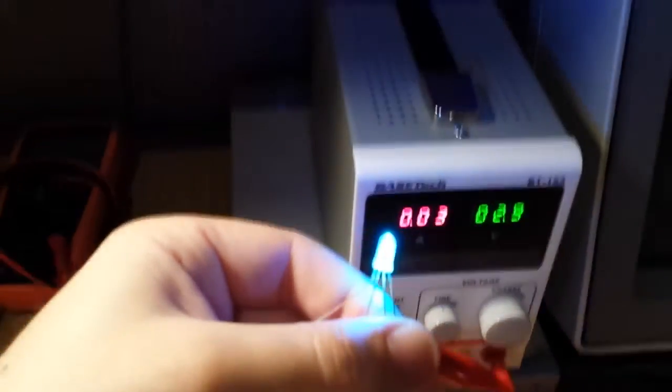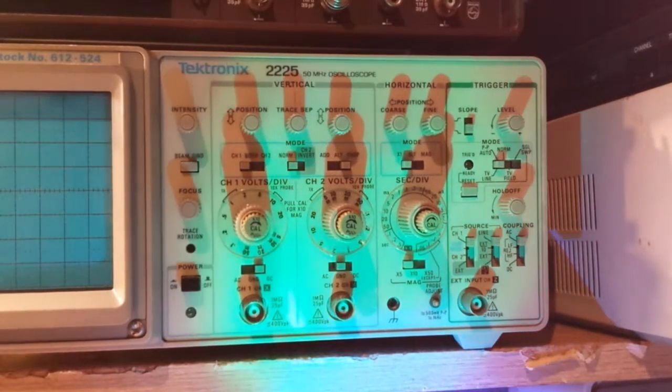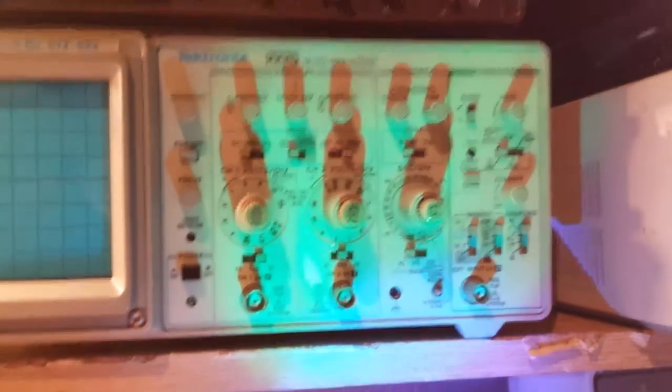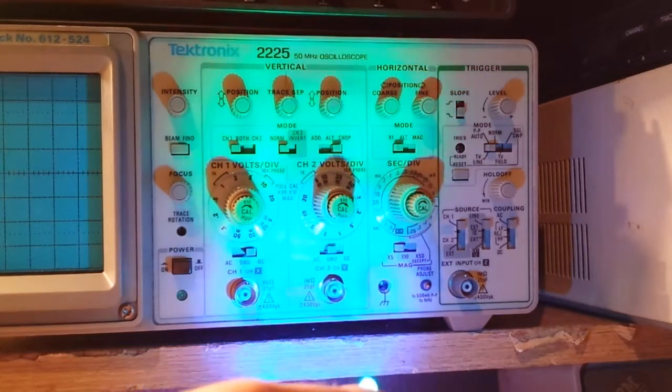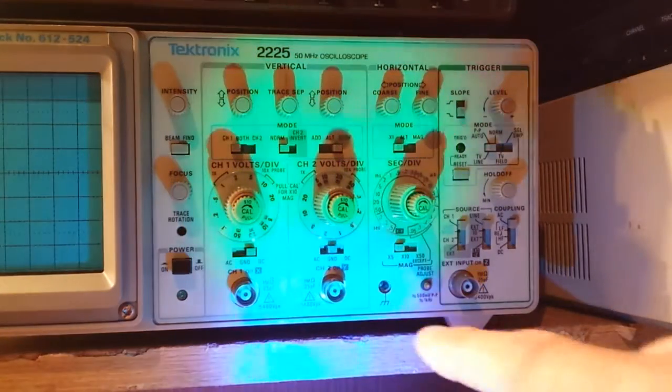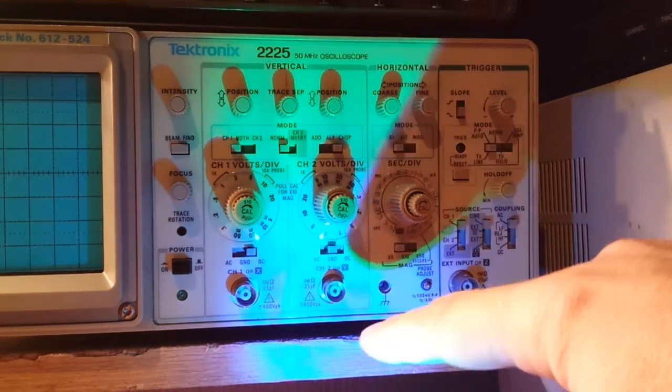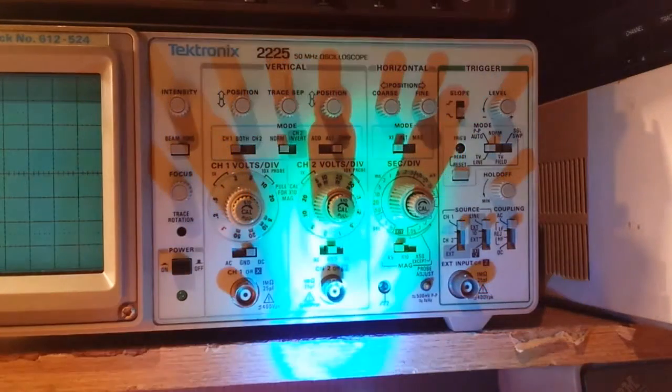And if you see the projection on my scope here, you can see... If I hold it like this, it looks green. If I tilt it, you can actually see the green part and the blue part, two projections from the dice inside.